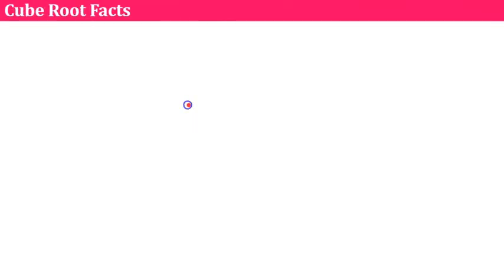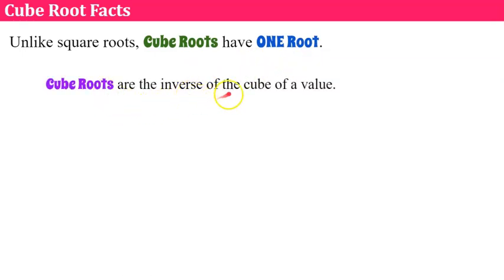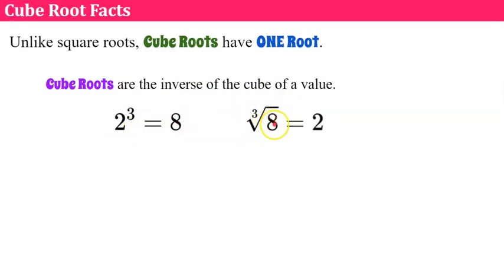Here are a few cube root facts. Unlike square roots, cube roots have one root. Cube roots are the inverse of the cube of a value. Here's an example: two cubed is equal to eight because this represents two times two times two. The cube root of eight is the inverse of cubing two and equal to two. So if two cubed equals eight, then the cube root of eight is equal to two. Think of these operations as cubing and cube root — they are inverse, they undo each other.